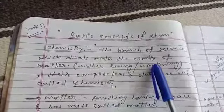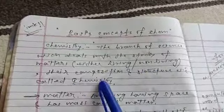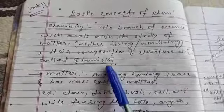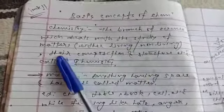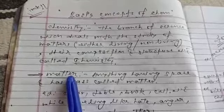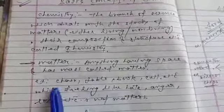First of all, what is matter? You have learned in class 10th also - matter is anything having space and mass. Chair, table, books, cell, everything are examples of matter.